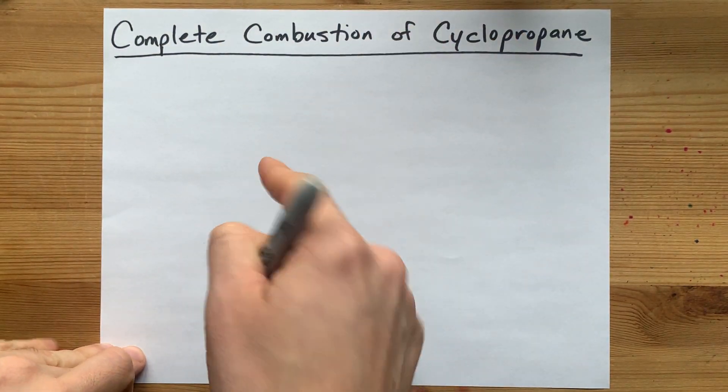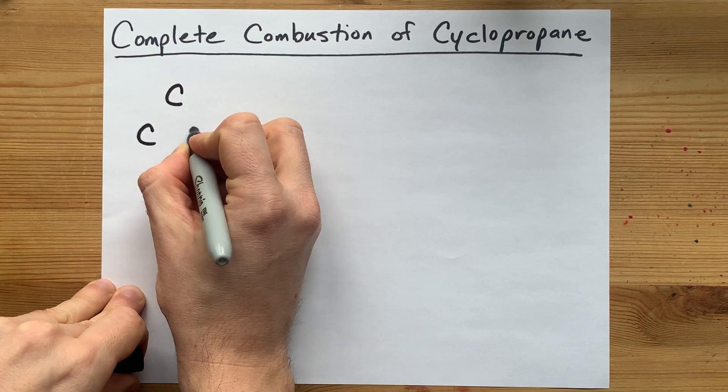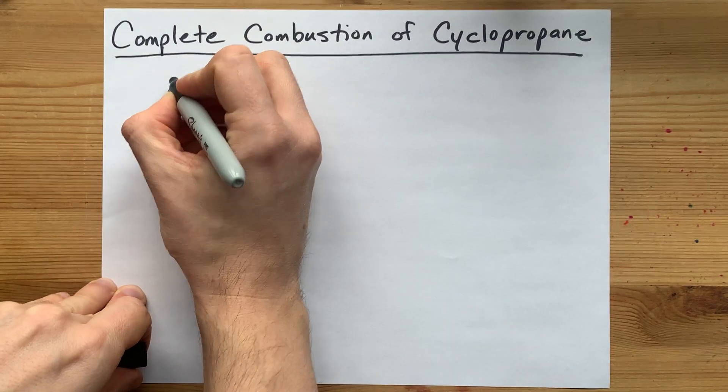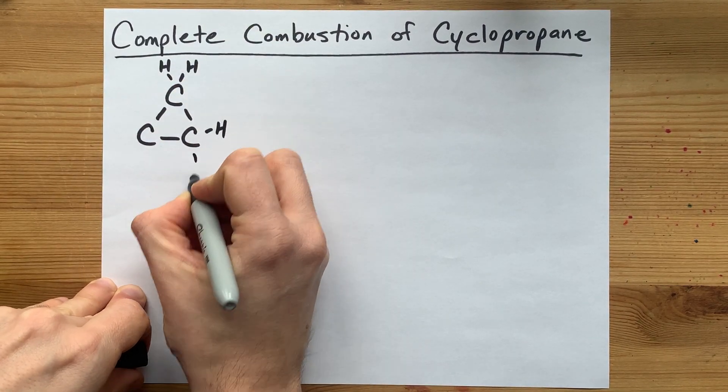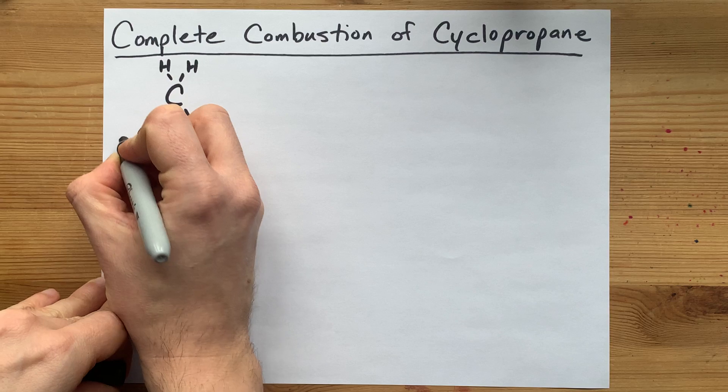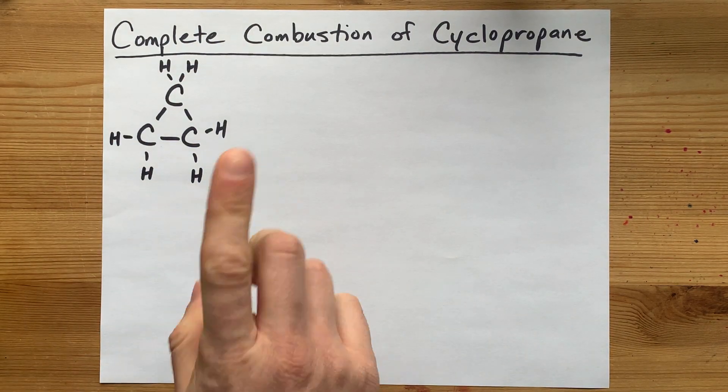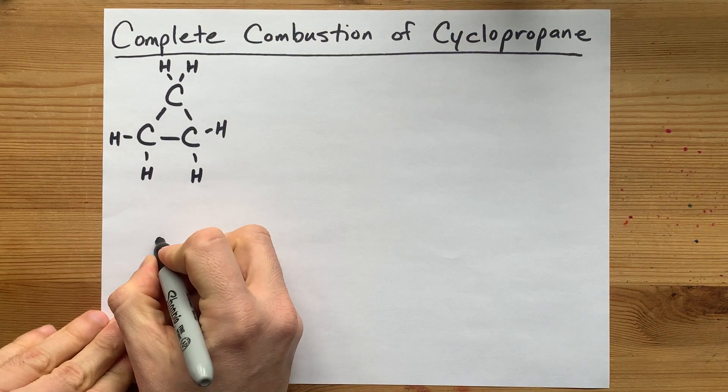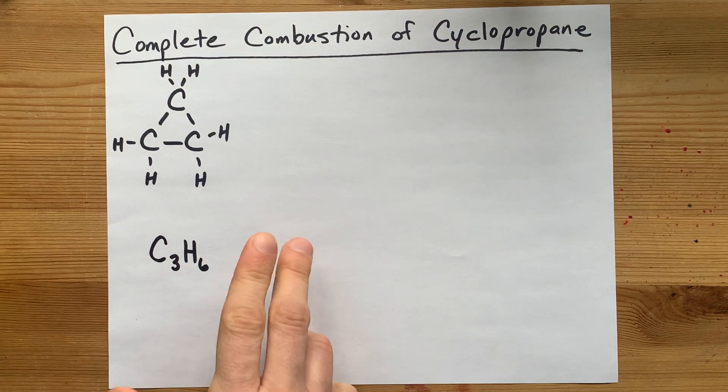Let's start by figuring out what cyclopropane is. It is three carbons in a ring, and then you have enough hydrogens to complete the octet on each of the carbons. So there's your molecular structure of cyclopropane. What matters to you is that it is C3H6. Great start.